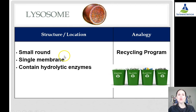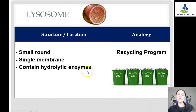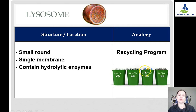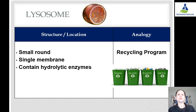Lysosomes are small, round vesicles — a type of vesicle. They're single-membrane, and what makes them different from traditional vesicles is that they contain hydrolytic enzymes: very acidic enzymes that break things down so they can be recycled. Our analogy is like a recycling program — it takes things that are worn out or broken in the cell, breaks them down into individual subunits so they can be reused elsewhere.